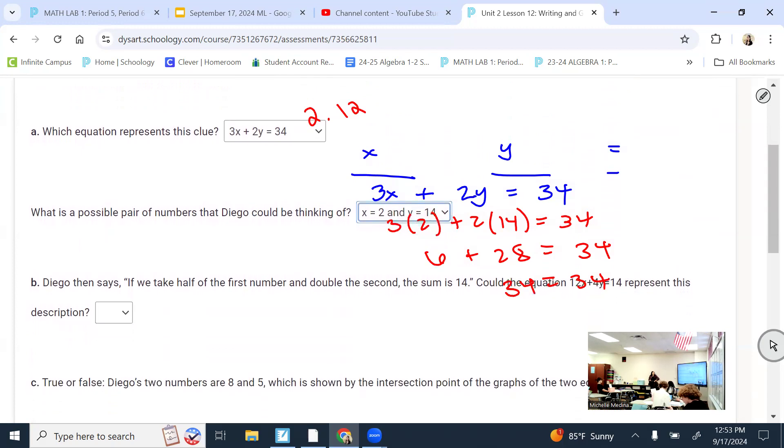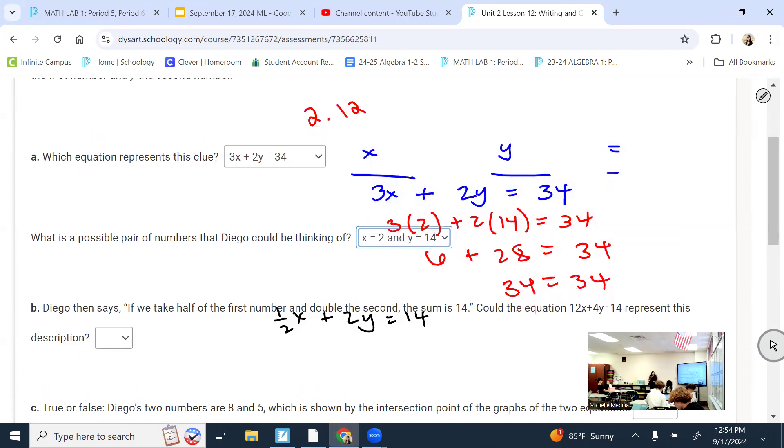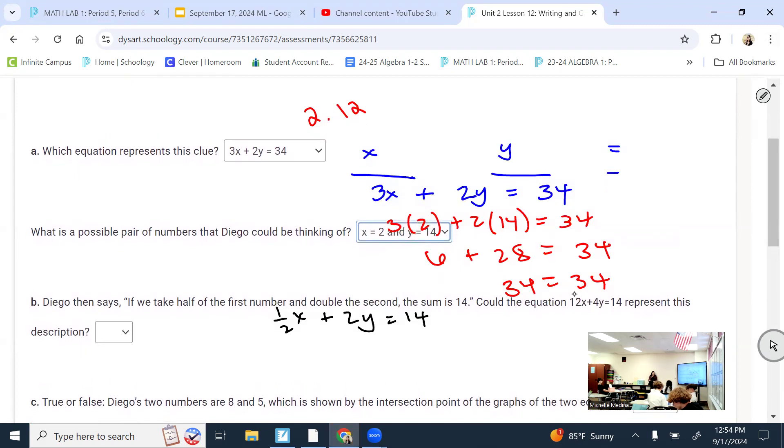Now it says, Diego then says, if we take half of the first number, what variable was for the first number? Okay. So we're taking half of that. You could do it as one half times X or X divided by two. Same difference. But if we take half of the first number and double the second, what were we calling the second number? Their sum is 14. So does this equation 12X plus 4Y equal 14 represent this? I'd say no. I don't think I could even make this into that.